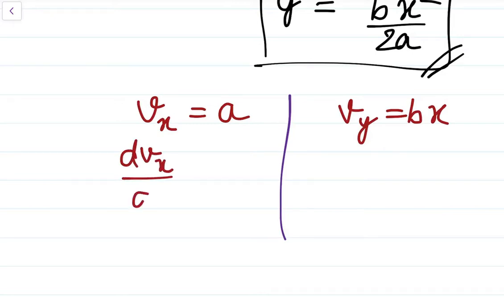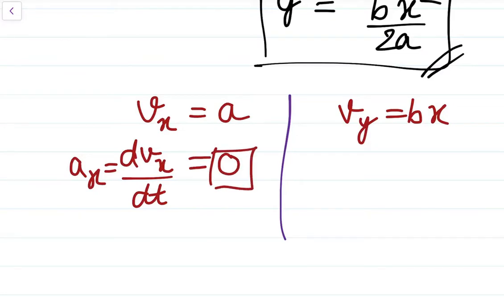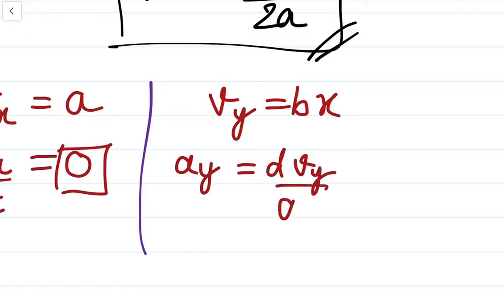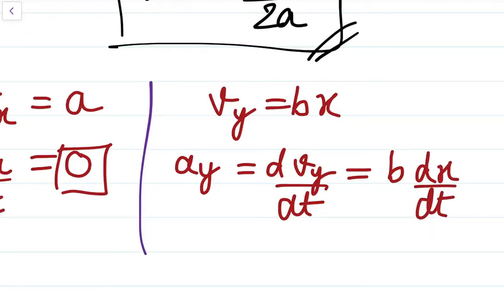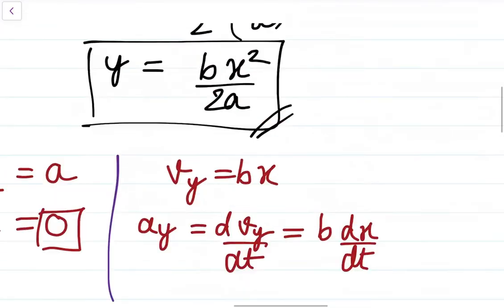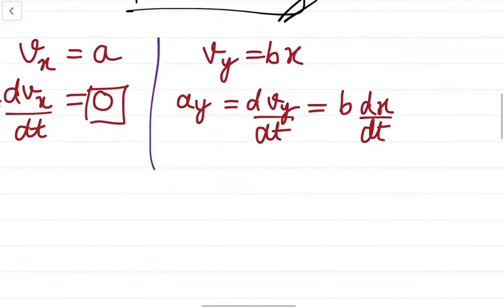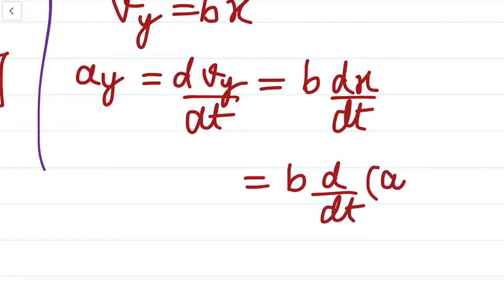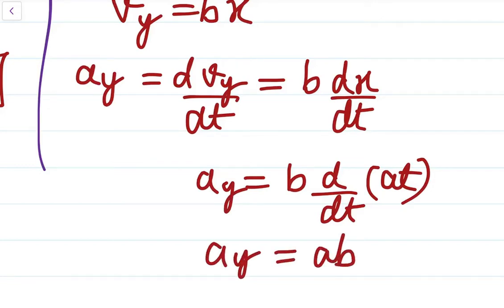Differentiating to find acceleration: dvₓ/dt gives aₓ = 0, because a is a constant, so there is no acceleration in the x direction. For ay = dvy/dt = b·(dx/dt) = b·a = ab, which is also a constant. So acceleration in the y direction is ab (constant) and acceleration in the x direction is zero.